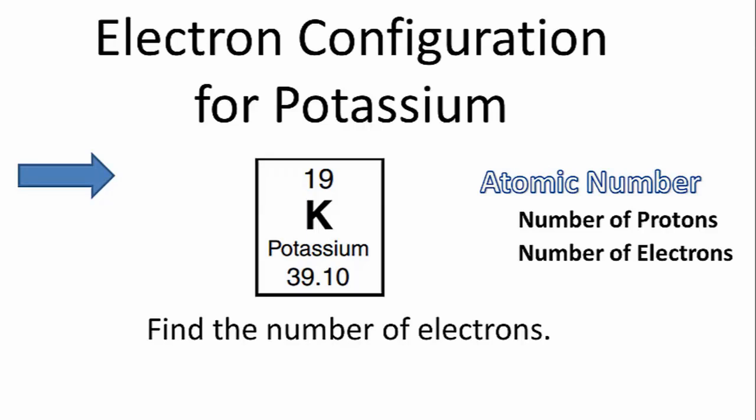To find the electron configuration for potassium, we'll look on the periodic table and find the atomic number. That's the number above the element symbol.